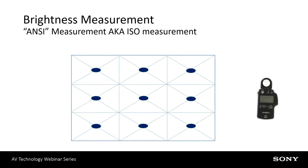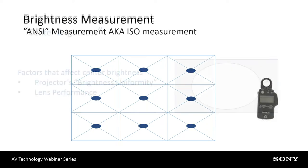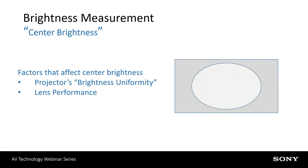ANSI, or the American National Standards Institute, got out of the business of doing projector specifications several years ago. The ISO — International Standards Organization — took this over, but the measurement and how it's done is exactly the same. You take a light meter, measure reflective light off the screen over several points, and average it together. It's a very accurate, fair way to do the measurement because you're looking at the entire screen. More recently, there's been a move to a spec called center brightness, which basically measures the light at the center of the image.